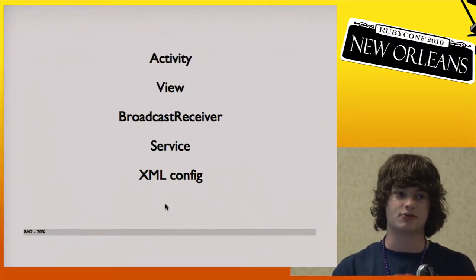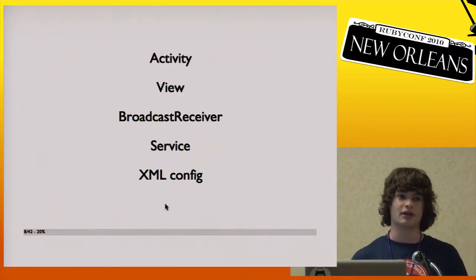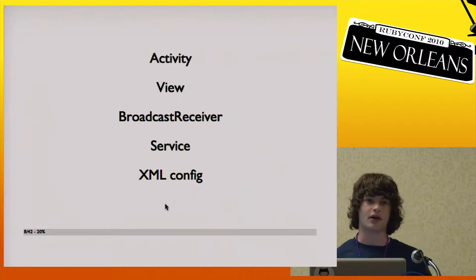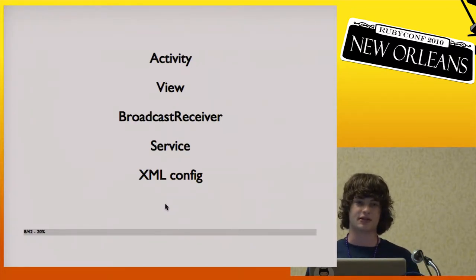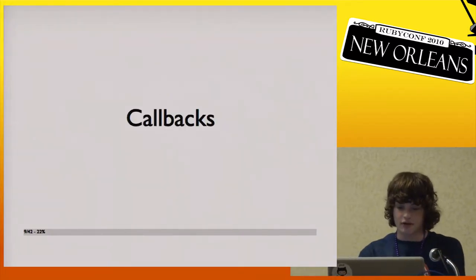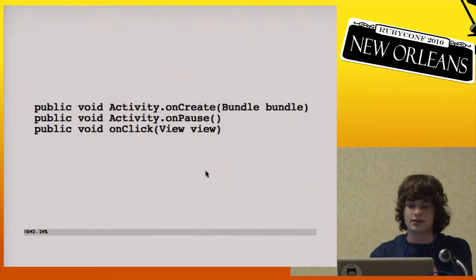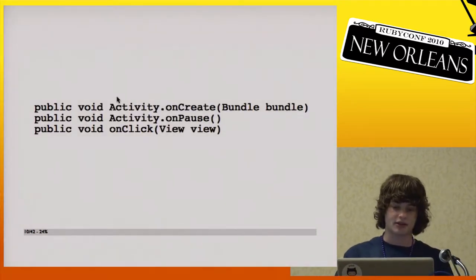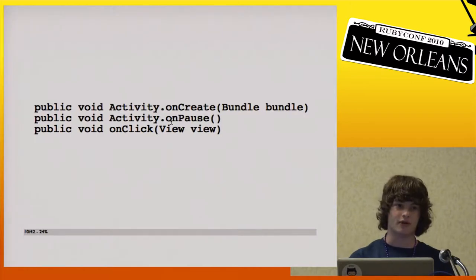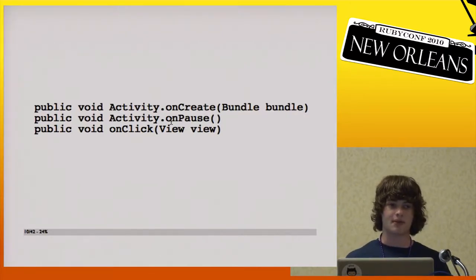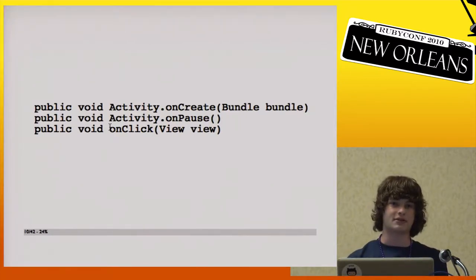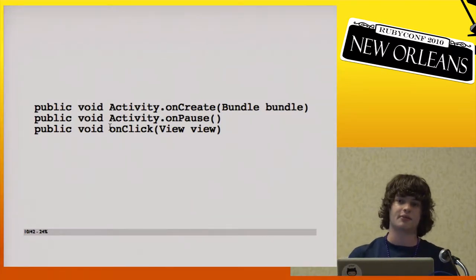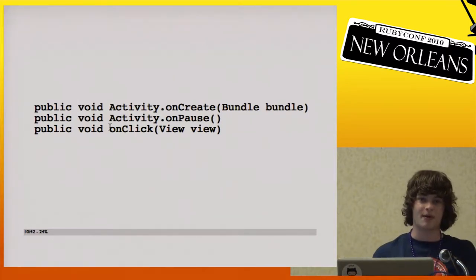Finally, there's a lot of XML config where you define the name of your app, do layout, and ask for permissions for sensitive stuff like getting their location or reading their SMSs. The whole thing is built on callbacks — you'll subclass activity and implement onCreate, which gets called when it starts. onPause is when they move to another activity, where you save state and stop CPU-intensive stuff. There's also an onClick interface, so basically whenever stuff happens, some method gets called.